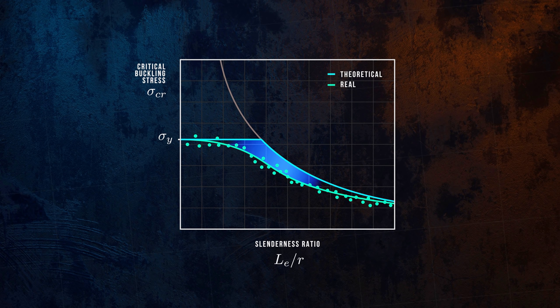This is because for columns in this transition range, buckling is actually a complex combination of these two failure modes. This is called inelastic buckling, and the theoretical behaviour can be modelled using methods like Engesser's theory or Shanley's theory.